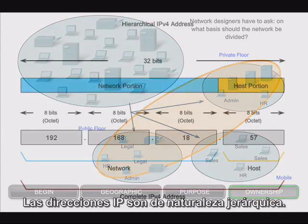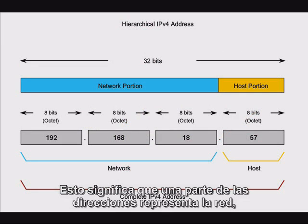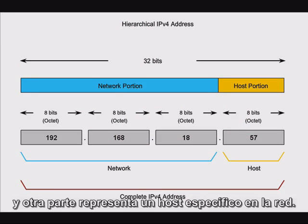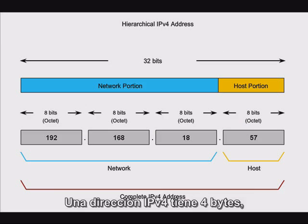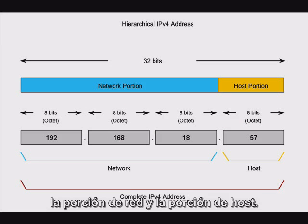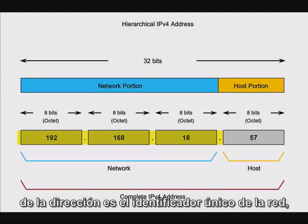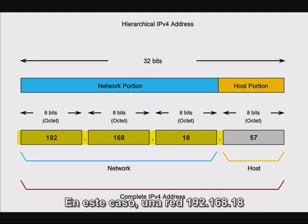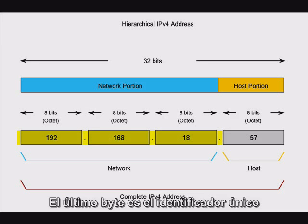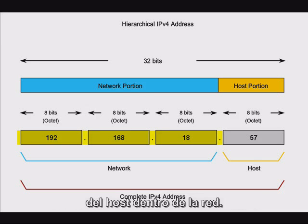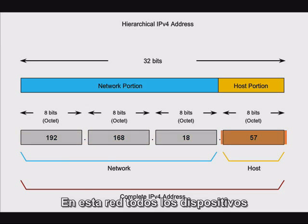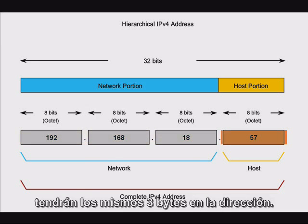IP addresses are hierarchical in nature — part of the address represents the network, and part represents a specific host on the network. An IPv4 address is four bytes, divided into two parts: the network portion and the host portion. In this example, the first three bytes of the address are the unique identifier of the network — in this case the 192.168.18 network — and the last byte is the unique identifier of the host within that network, in this case the .57 host. In this network, all devices will have the same first three bytes in the address.